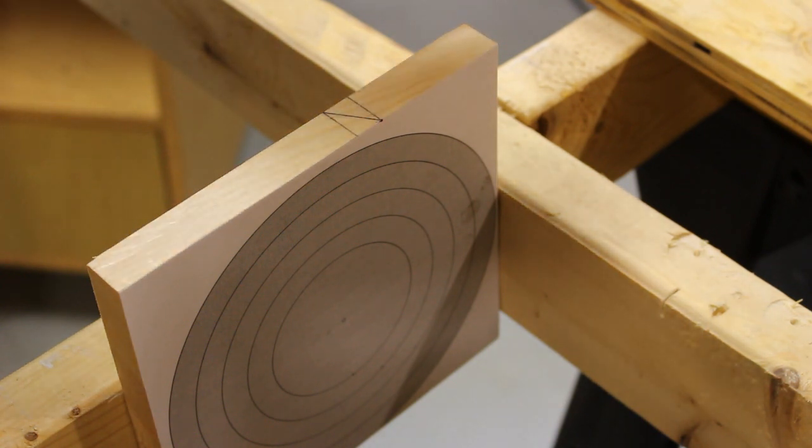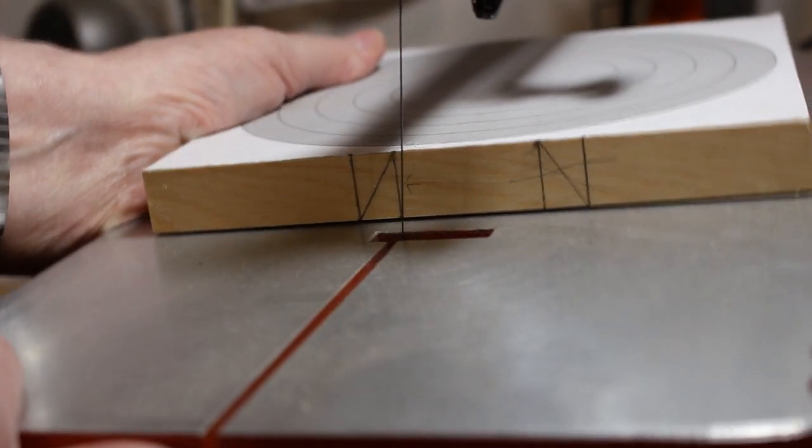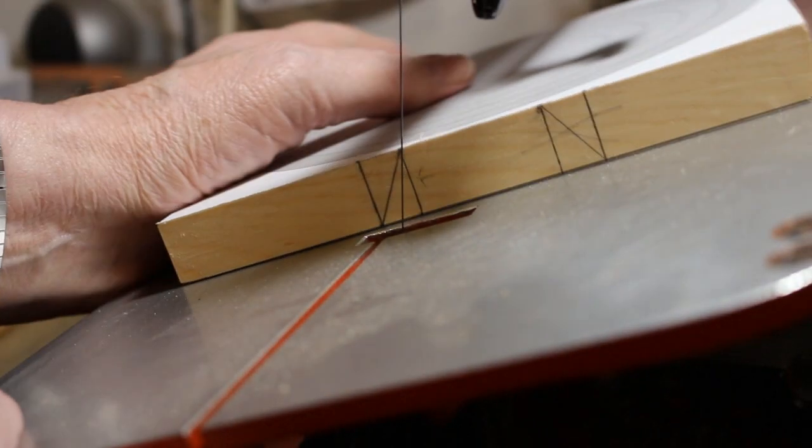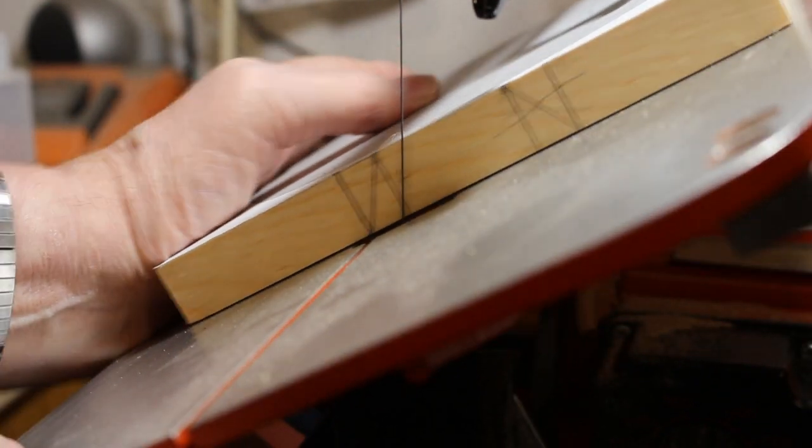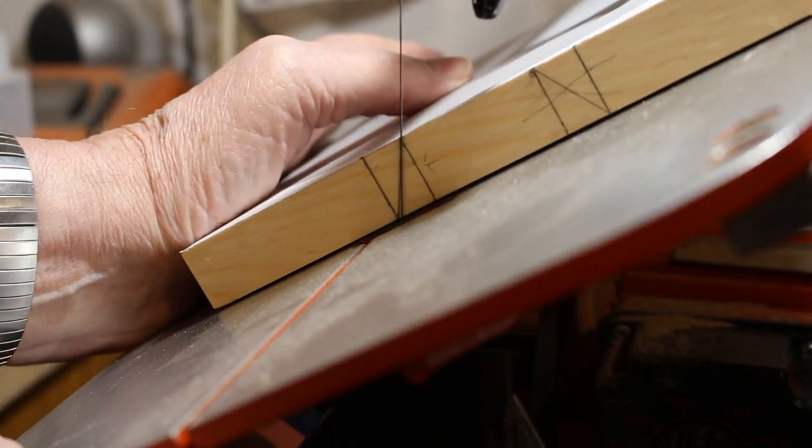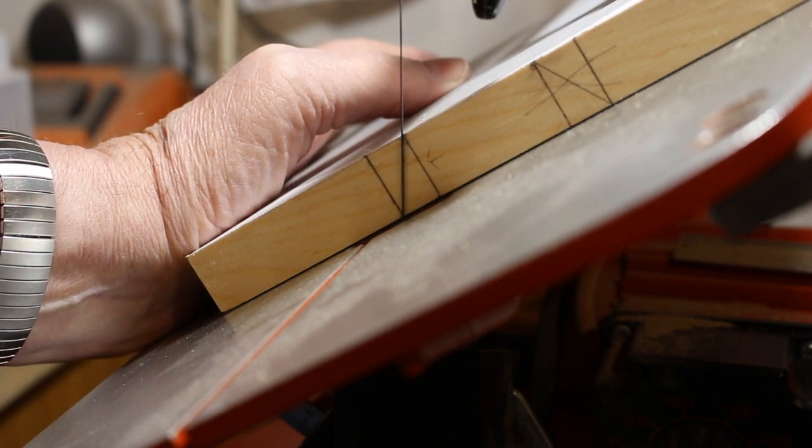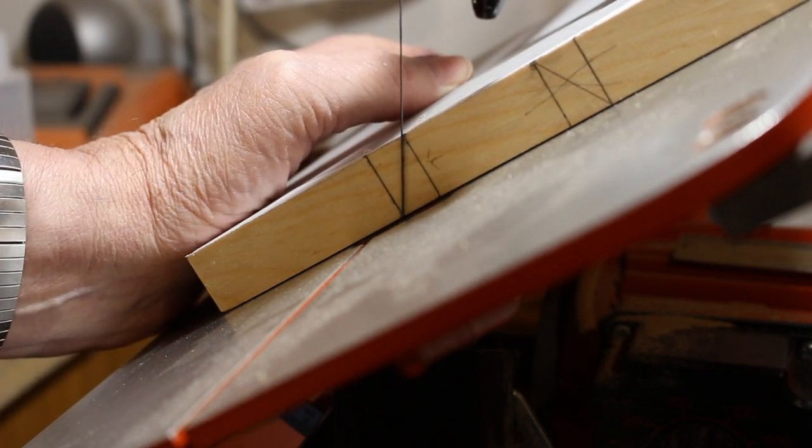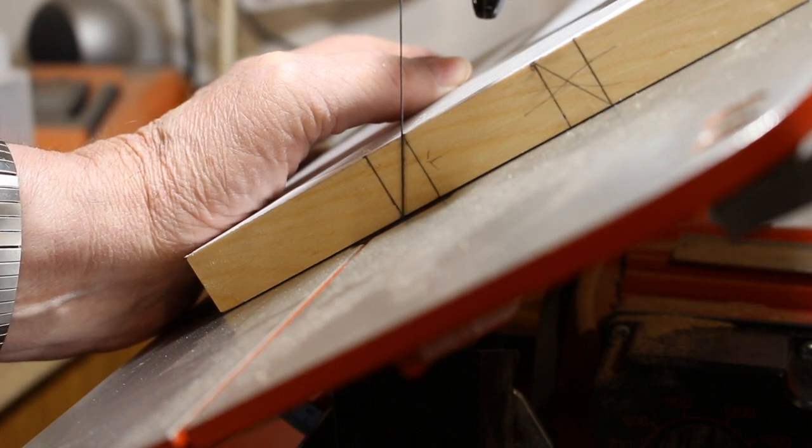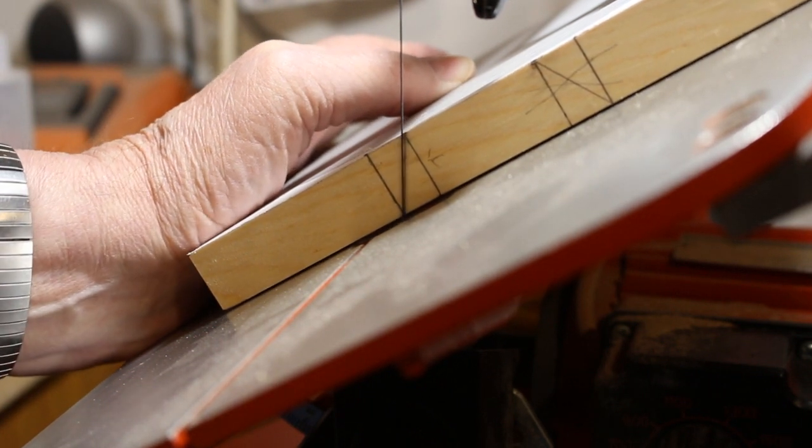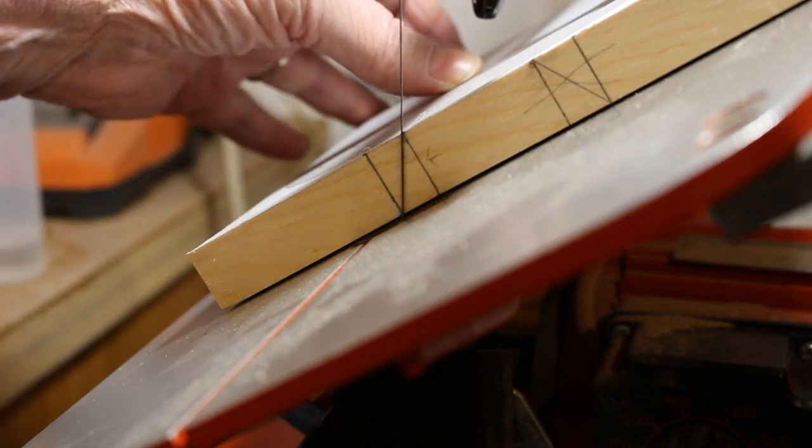So now what I do is I take my table and I tilt it until it matches the angle that I drew on the side of my board. And I tighten it up. Now that's the angle that I'm going to cut these rings out at.